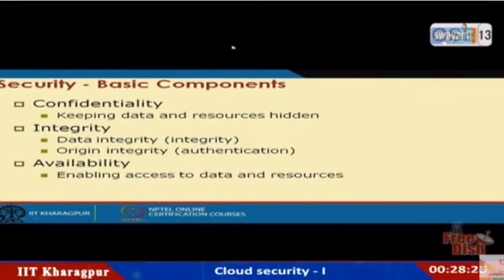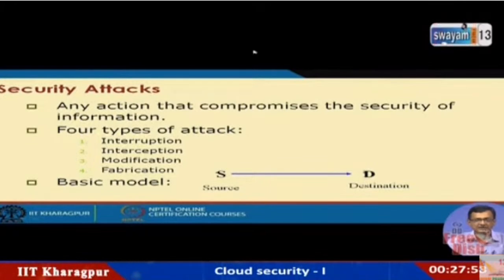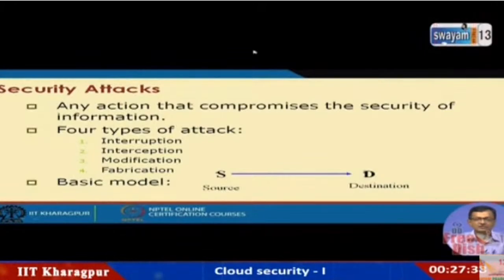Any security attack — any action that compromises the security of information or violates the CIA components — is the basic premise. There are typically four types of things that can be compromised during an attack: interruption, interception, modification, and fabrication. The combination of these encompasses all types of compromised security. The basic model is: A sends data to a destination. Interruption means the path is interrupted. Interception means the data goes from A to destination but somebody else intercepts and listens.